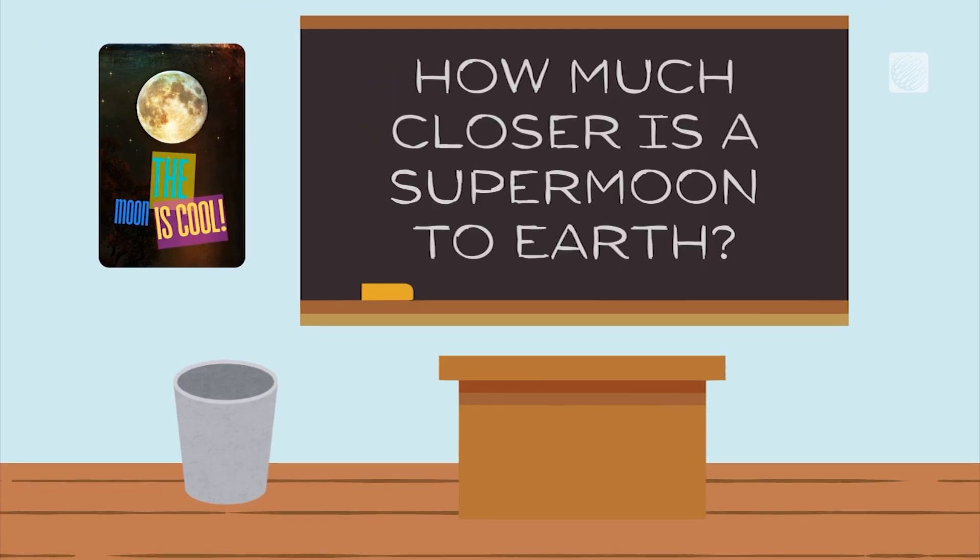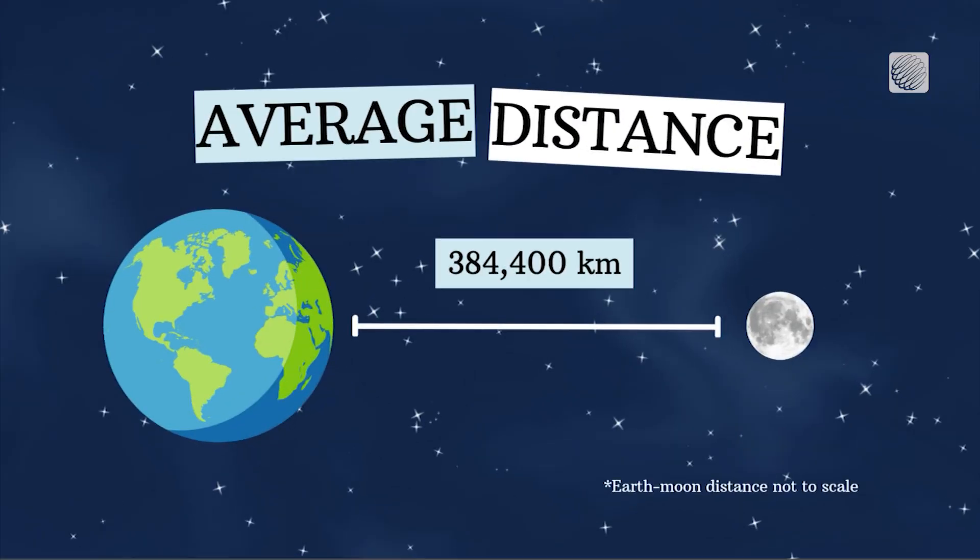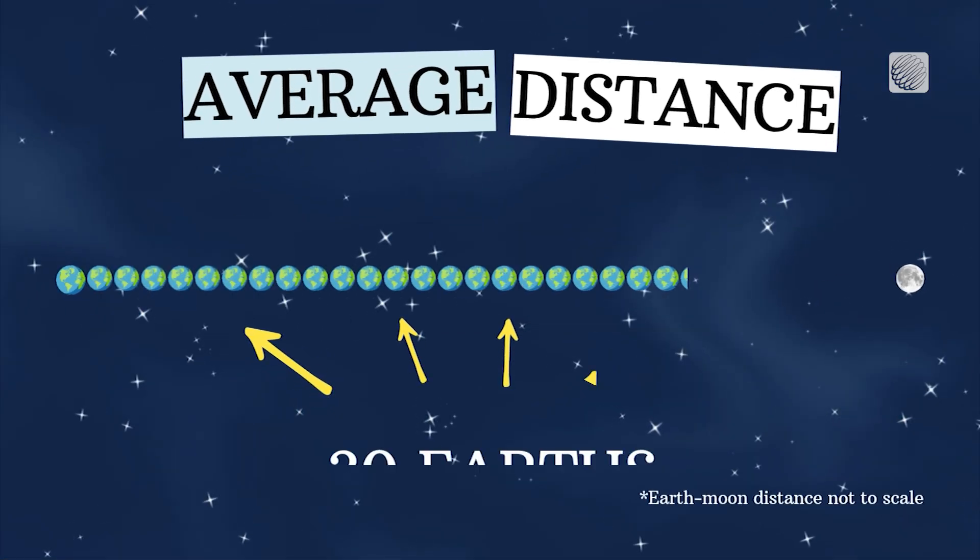So, how much closer is a supermoon to Earth? According to NASA, the moon's overall average distance is the equivalent of about 30 Earths lined up side by side.